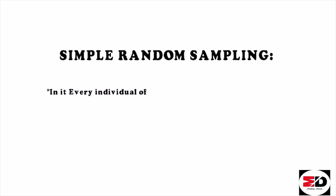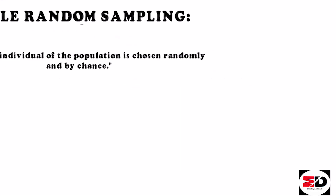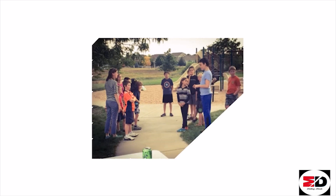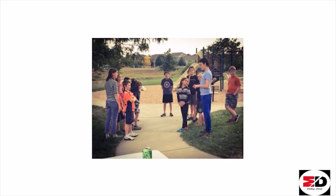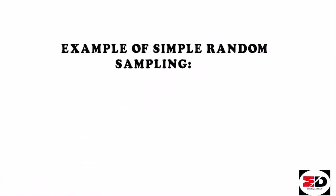Let's start with simple random sampling. In it, every individual of the population is chosen randomly and by chance. In simple random sampling, every individual has an equal chance of selection. Selection is done either through a simple lottery or via computer software.